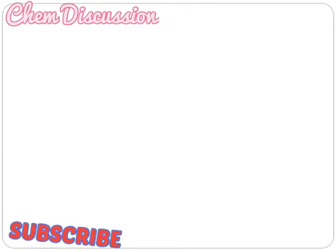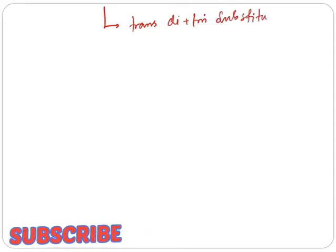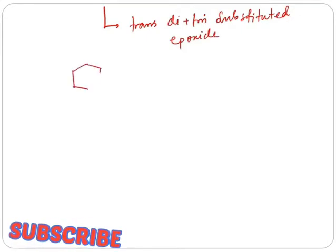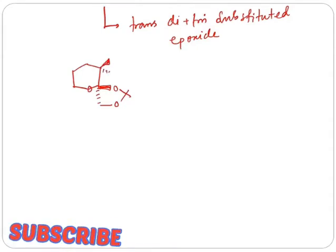So now I will be talking about Shi epoxidation reaction. The basic features of Shi epoxidation reaction is it gives trans di- plus tri-substituted epoxides. The active catalyst consists of fructose-derived dioxirane compound. That is why I have discussed DMDO earlier.